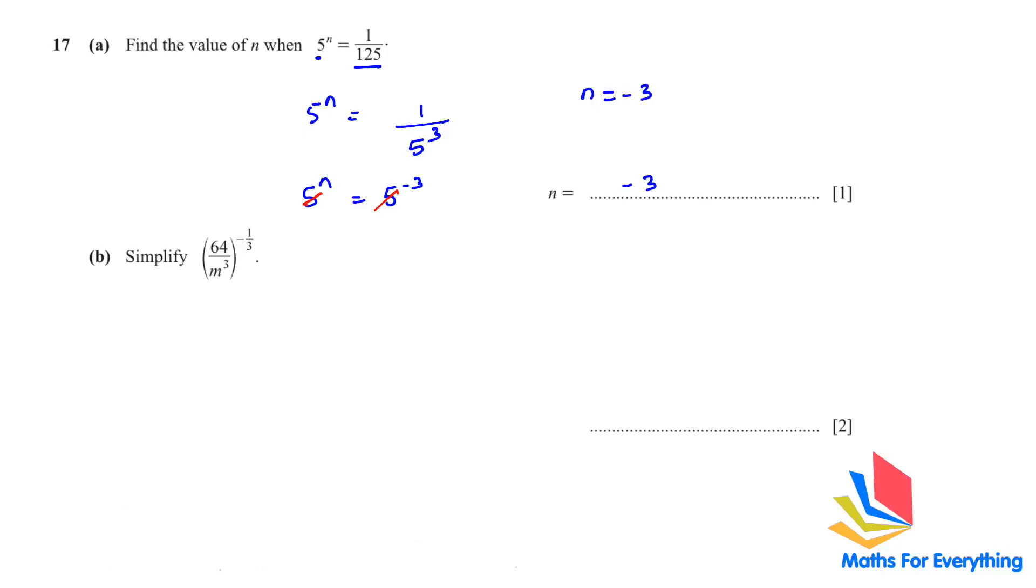Part B: simplify (m^3/64)^(-1/3). First, the power is negative, so if you want to make the power positive, flip what is inside the bracket. So we have 64 over m cube becomes m cube over 64. Now our power is positive.